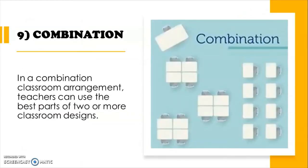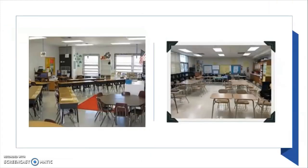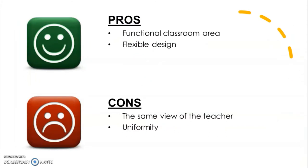The last one is combination. In a combination classroom arrangement, the teacher can use the best parts of two or more classroom designs. The arrangement can be changed on a day-to-day basis or be permanent. Classrooms with different sizes of desks may use this type. Pros: it makes use of whatever desks are available without requiring specific sizes or dimensions, and allows for a flexible design that can facilitate a workshop exercise or have students move from one station to another. Cons: it doesn't give every student the same view of the teacher or the same size or shape of workspace, and it doesn't allow for uniformity across the class.